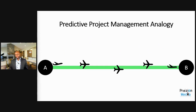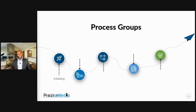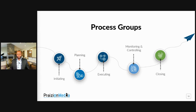For the traditional project management piece, your best bet is to go down the route of the process groups. There are five groups of processes: initiating, planning, executing, monitoring and controlling, and closing.